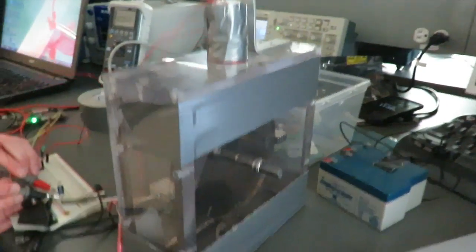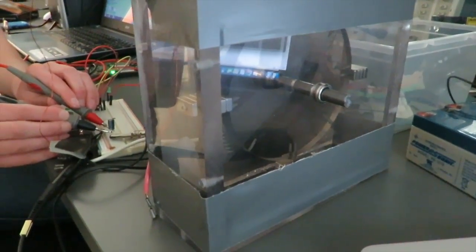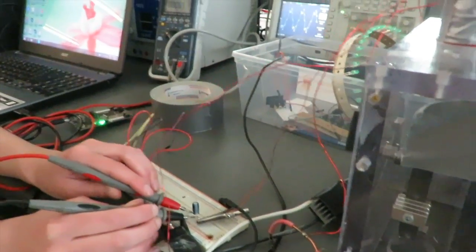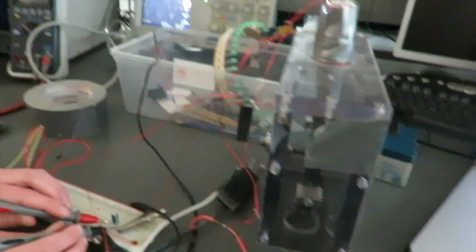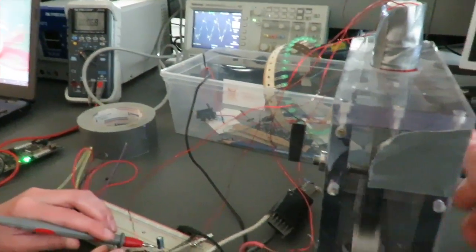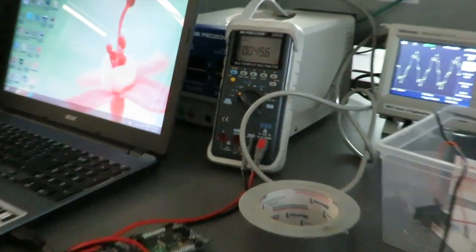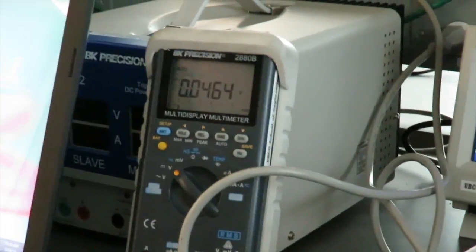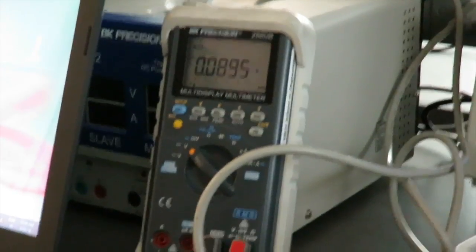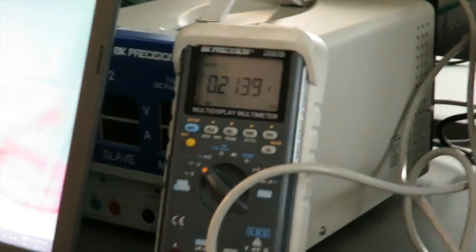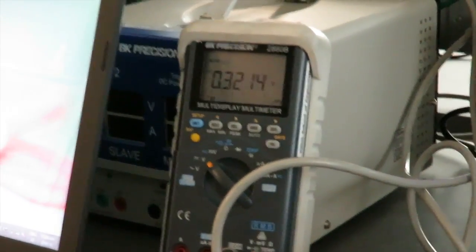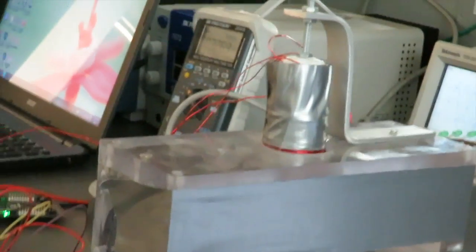Now we are in the lab with our small Bedini motor and we are just going to demonstrate the charging of the capacitor through the inductive field collapse when we are spinning this. You can see that charge is now building in the capacitor. We are up to 0.1 volts, 0.2, 0.3. We are demonstrating that the inductive field collapse of these magnets passing by this coil is charging this capacitor.